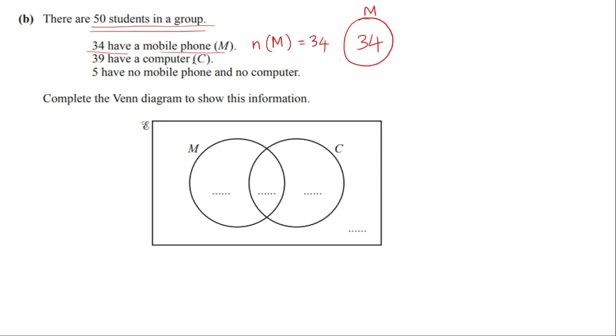39 have computer. So the number of students with computer is 39. That means in the whole circle there should be a total of 39. And 5 have no mobile phones and no computer. That means these 5 are not falling into both of these categories. So we will start from there. So 5 is outside the two circles. Why? Because they don't fall into both of these categories.